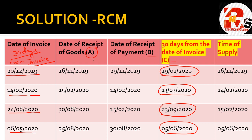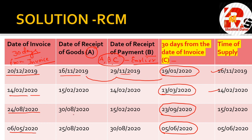Now compare columns A, B, and C - whichever date is earliest is the time of supply. Example 1: 16.11, 29.11, and 19.1.2020 - the earliest is 16.11, so time of supply is 16th November. Example 2: 15th Feb, 14th Feb, 13th March - earliest is 14th February. Example 3: 15th Feb, 29th, 9th - answer is 15th February. Example 4: 25th August, 38th, 5th June - answer is 5th June. These are the two concepts related to time of supply: goods sent on approval basis (Section 66) and RCM.